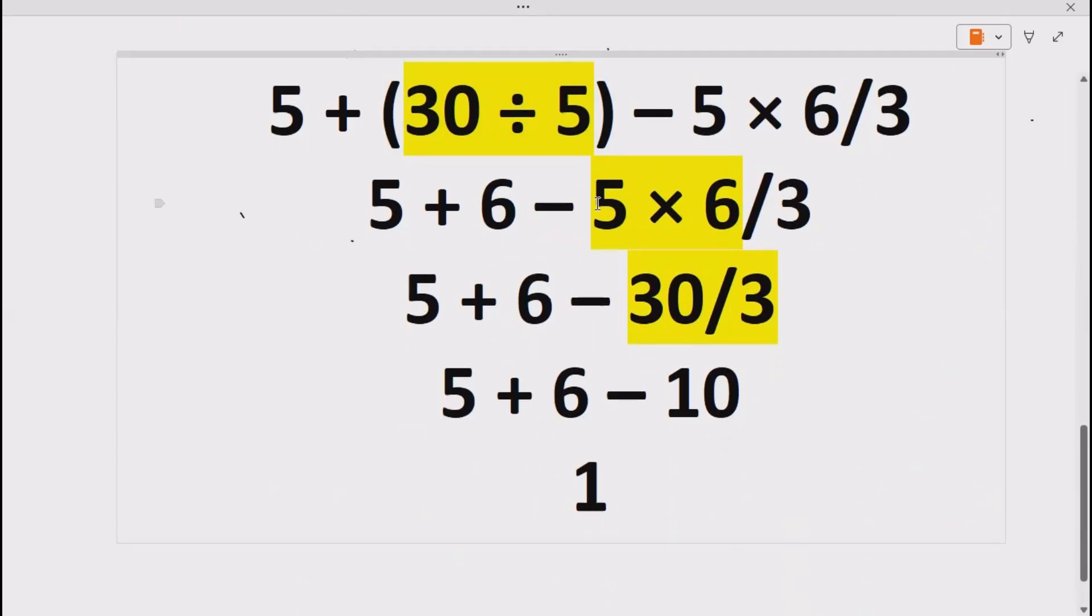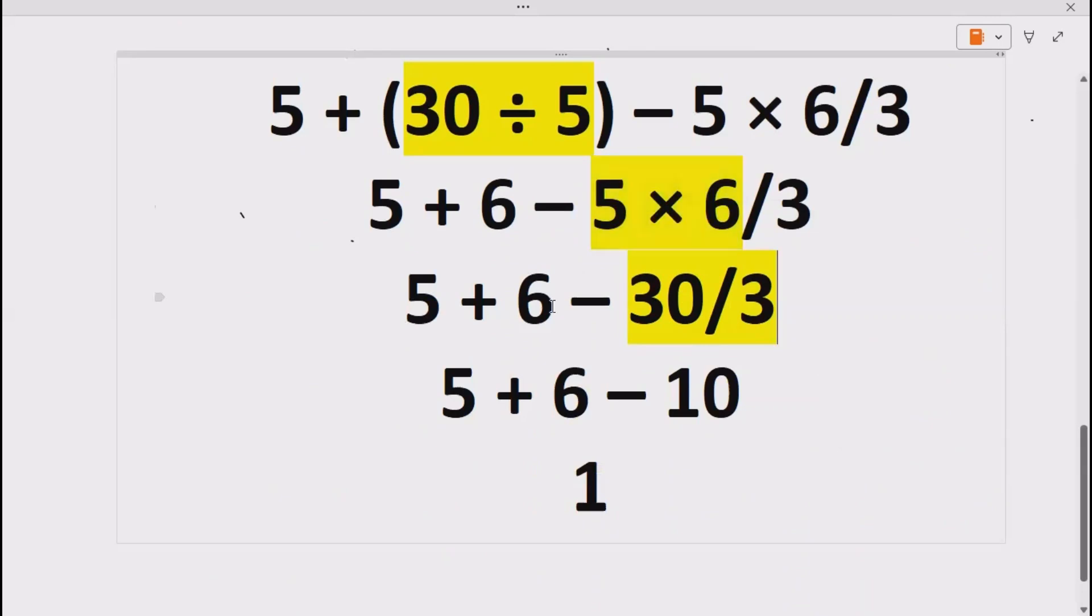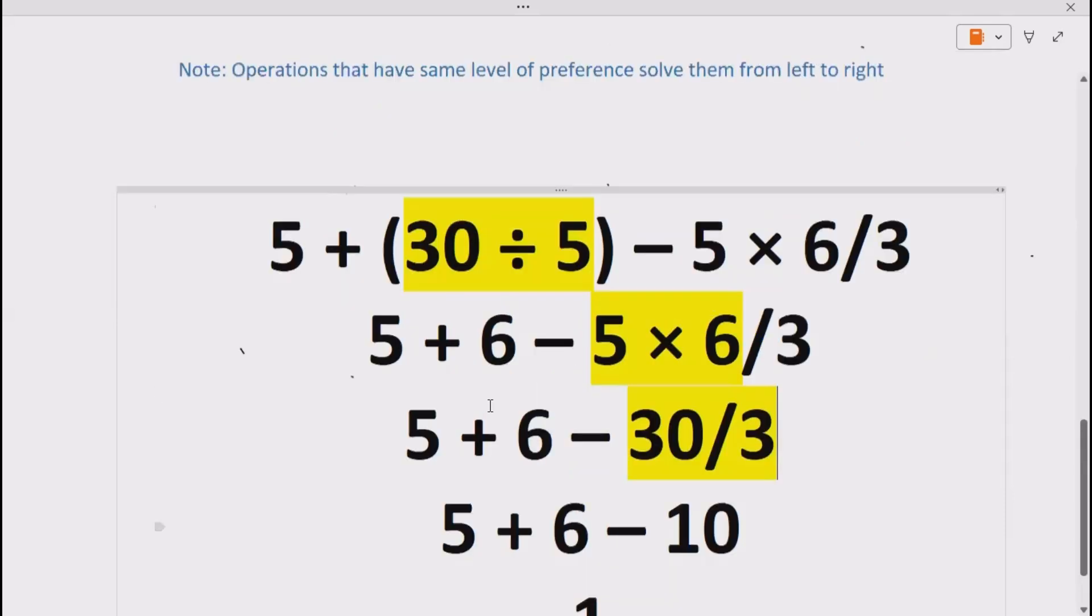Here we have to do division first, so 30 divided with 3 gives us 10. Now 5 + 6 is 11. 11 - 10 is 1, which means part B is our correct answer.